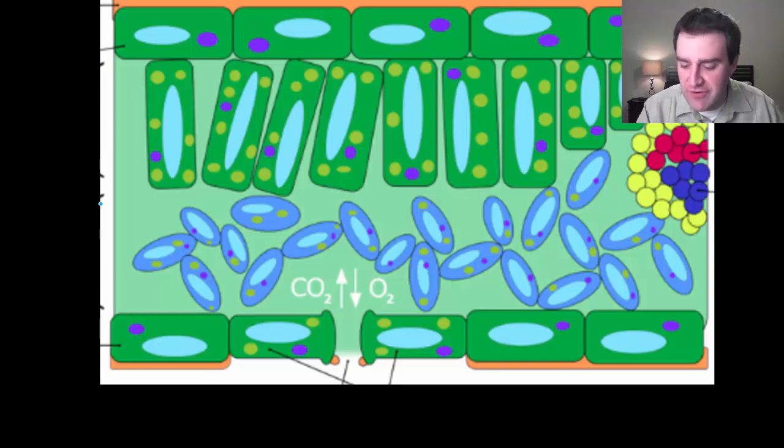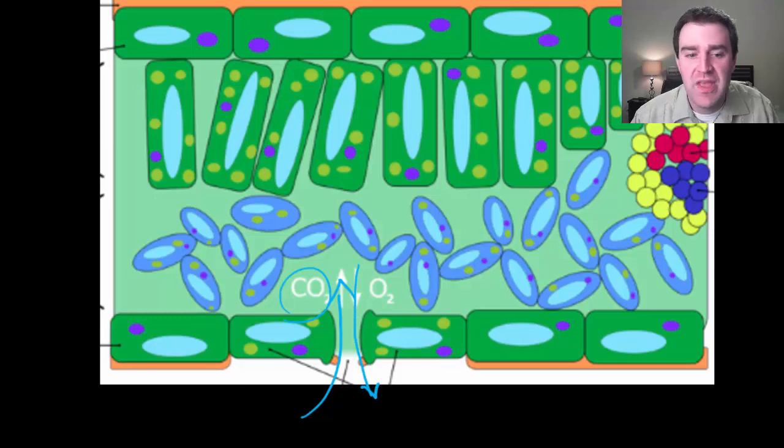Now you can't have cuticle everywhere as a plant because as it turns out you've got to have some pores or some holes that allow the gases to cross. Remember that you not only need water for photosynthesis from the roots but you also need carbon dioxide gas to come in and you need to be able to let out the oxygen gas that you produce as well. And so we call these pores in the leaves, very small holes, stomata.